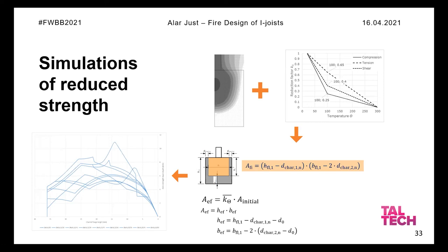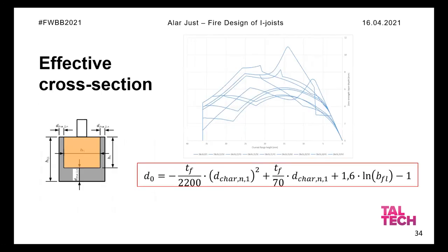The D0 formula for optimized I-joist flanges is more complex than for rectangular cross-sections. Unlike the constant D0 used elsewhere, here D0 changes over time — rising to a peak and then decreasing. To use it, you need to know the flange width and the time in fire.